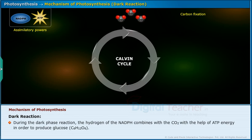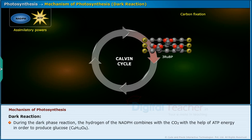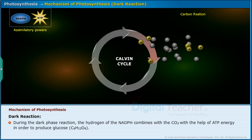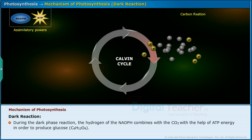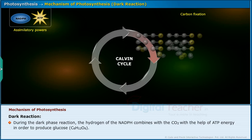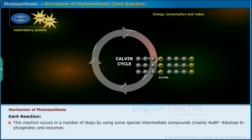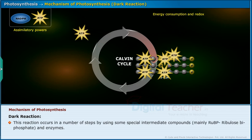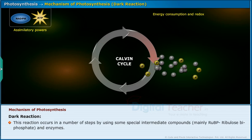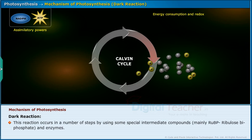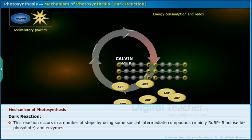During the dark phase reaction, the hydrogen of the NADPH combines with carbon dioxide with the help of ATP energy in order to produce glucose. This reaction occurs in a number of steps by using some special intermediate compounds, mainly RUBP (ribulose biphosphate) and enzymes.